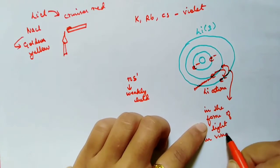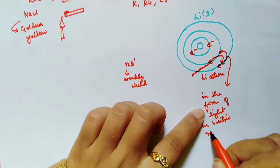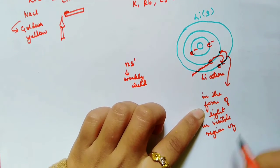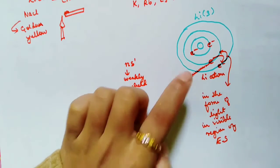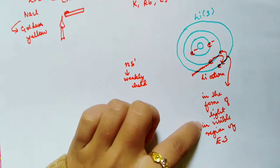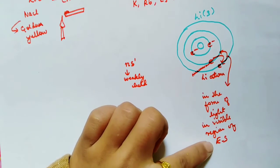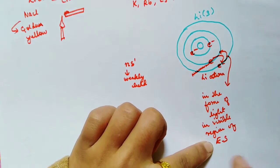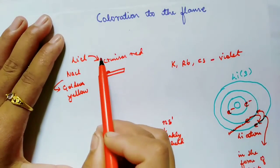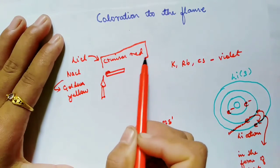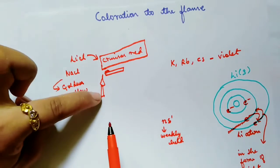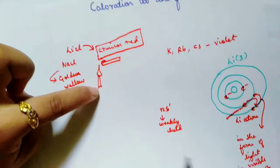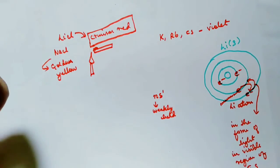That energy is given out in the form of light in the visible region of the electromagnetic spectrum. That light — the absorbed energy released as visible light — is the color, the crimson red, shown by the compound of lithium when it is burned in a Bunsen flame.